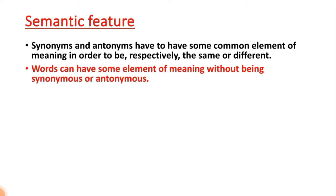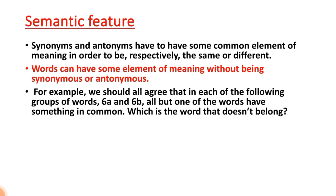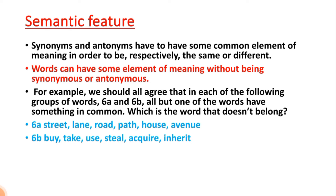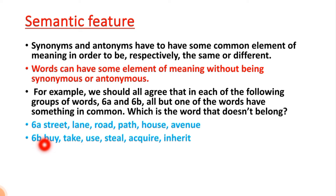Words can have some element of meaning without being synonymous or antonyms — two words can relate to each other without being synonyms or antonyms. For example, consider the group of words in 6a and 6b. In each group, all but one of the words have something in common. The task is to identify which word doesn't belong to the group.